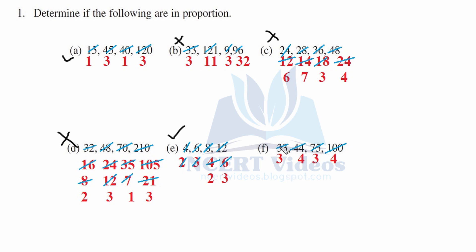Part f: Taking factor of 11 — 3 elevens are 33 and 4 elevens are 44. Similarly, 3 twenty-fives are 75 and 4 twenty-fives are 100. The ratios are equal — 3 is to 4 on both sides — therefore they are in proportion.